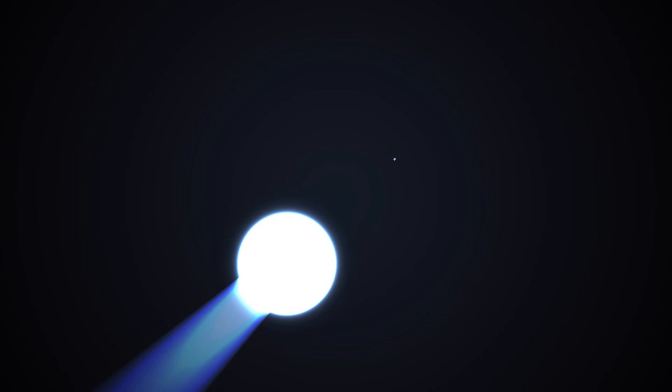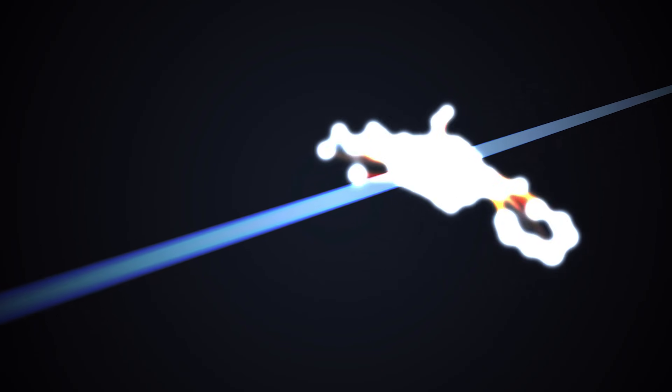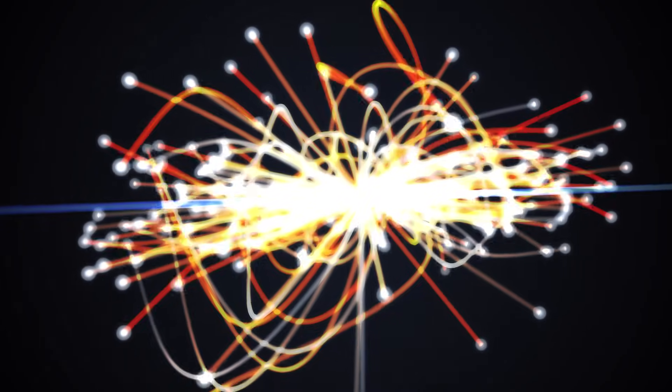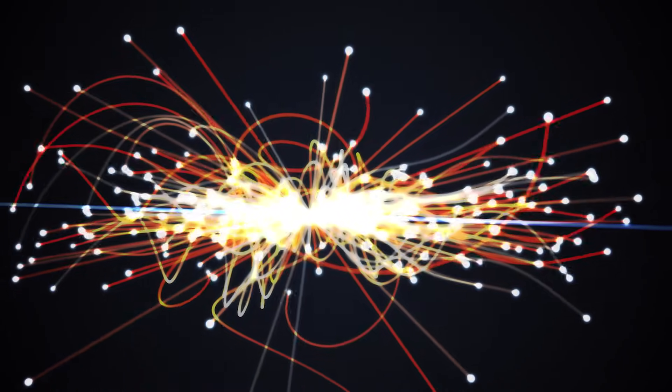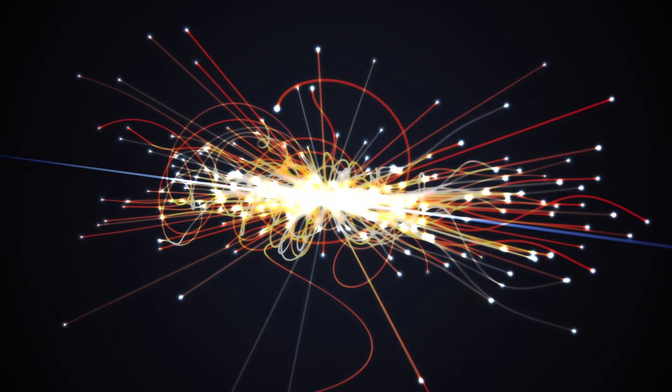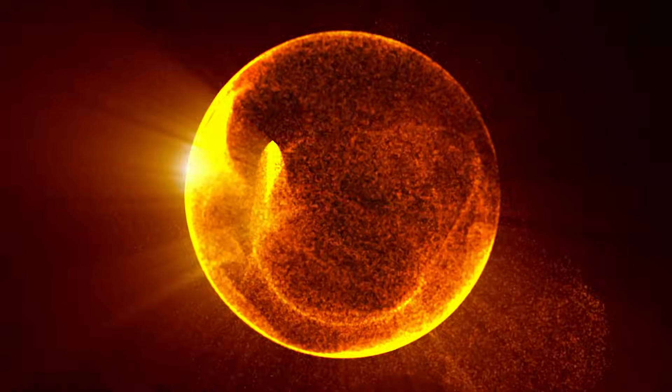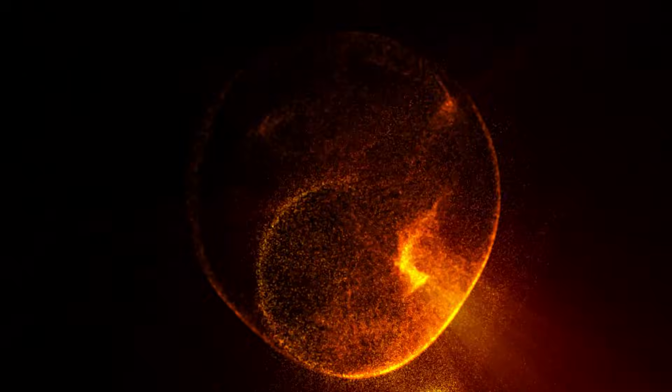String theory was first introduced as a model of strong interactions. It was found that this theory could describe specific cases of particle scattering observed in the strong interactions between hadrons, the subatomic particles like the proton and neutron.